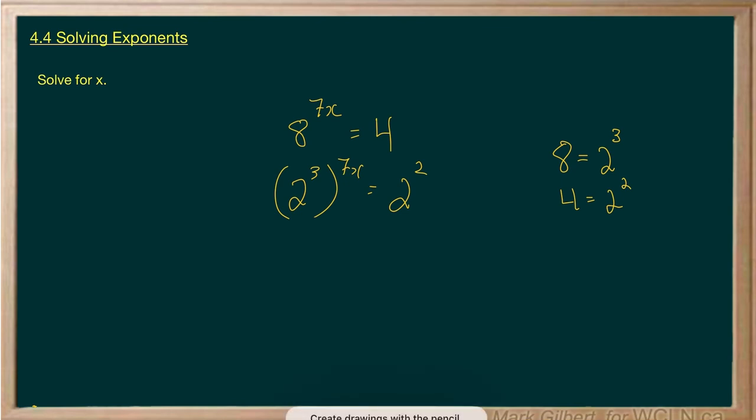Now, once the base of the power is the same, then the exponents can be equal and we can solve. So I can multiply using the power law here. 2 to the 21x is equal to 2 squared. So no matter what happens here, 21x has to be the same as 2. These exponents must be equal.